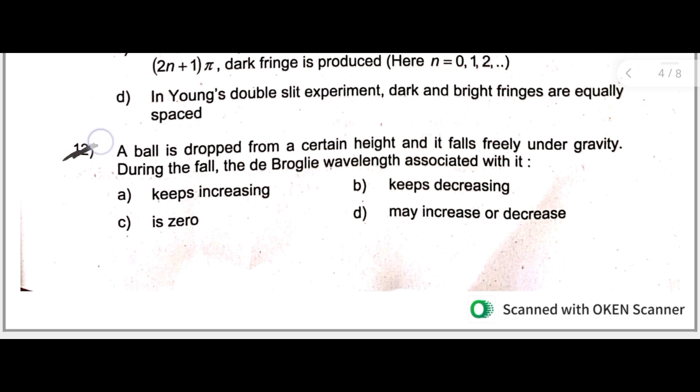Twelfth one: A ball is dropped from a certain height and it falls freely under gravity. During the fall, the de Broglie wavelength associated with it is - here the correct answer is B: keeps decreasing.